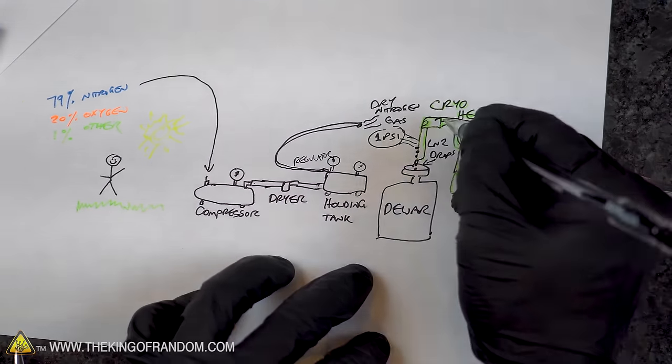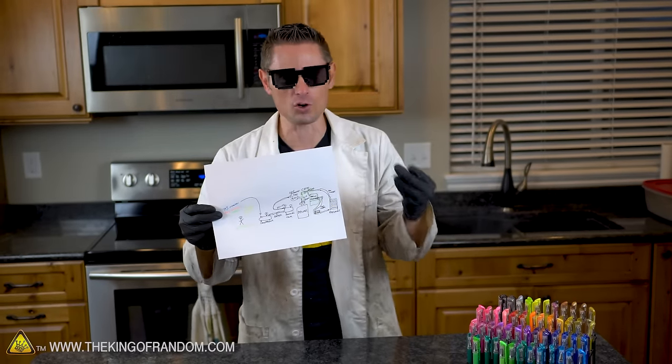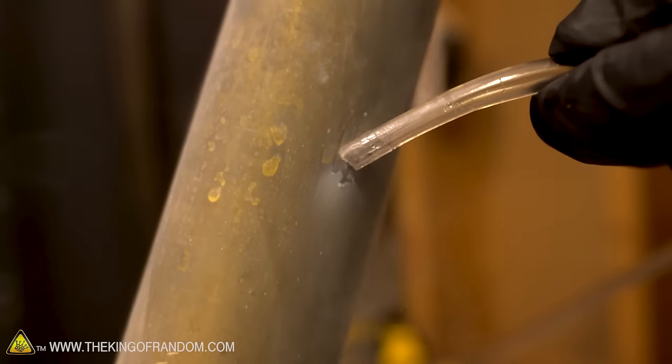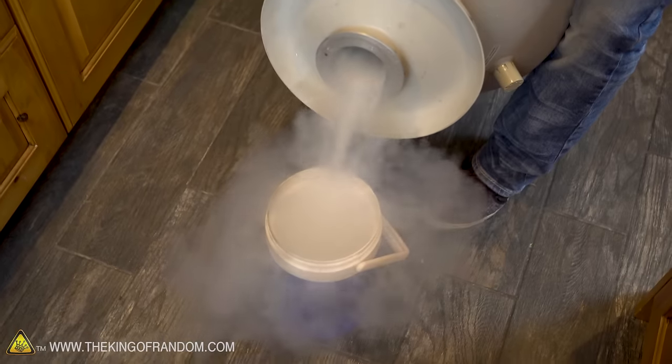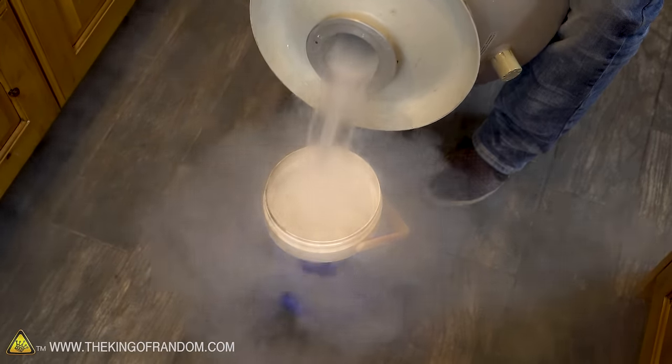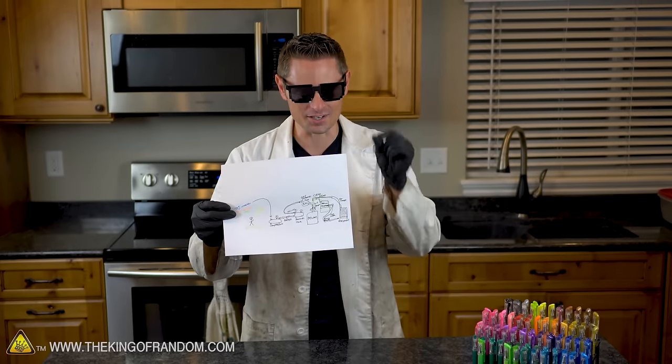So when we draw it out like this, it kind of looks like a complicated system and there are a lot of moving parts. But what it comes down to are two main essentials: dry nitrogen gas meeting a very cold surface. The nitrogen condenses, gets liquefied, and then gets captured into some kind of container that can keep it nice and cold. And that's it, that's the basics of making liquid nitrogen in a nutshell.